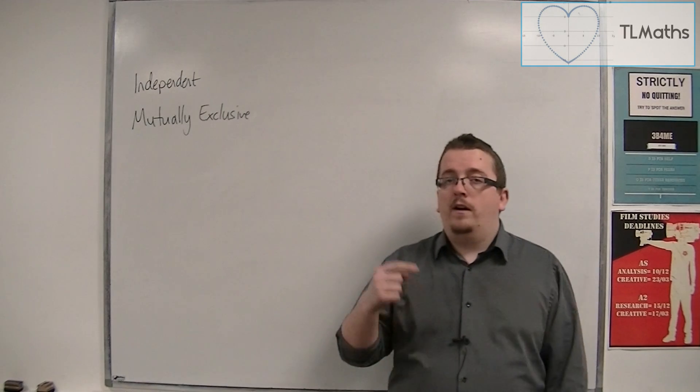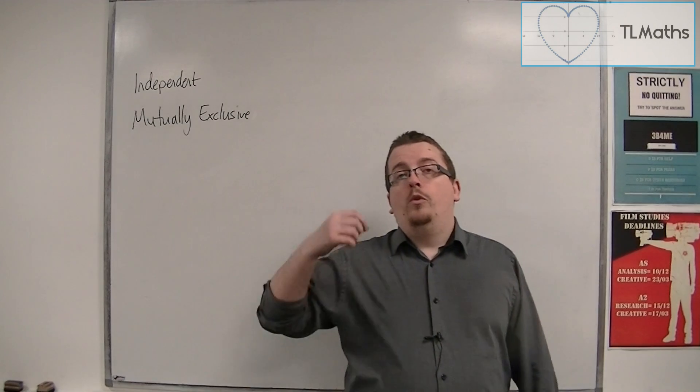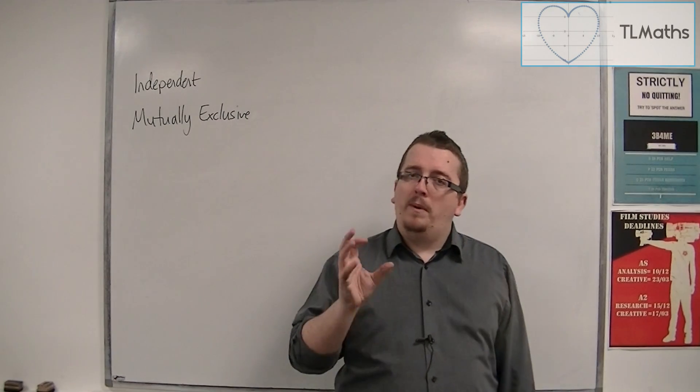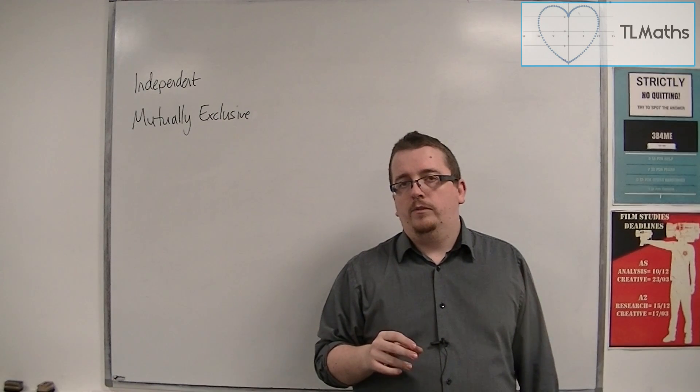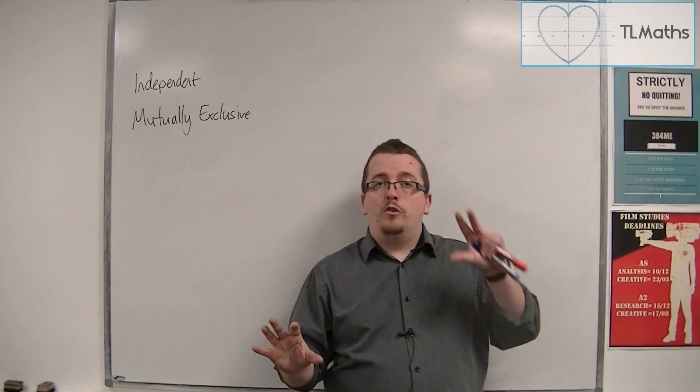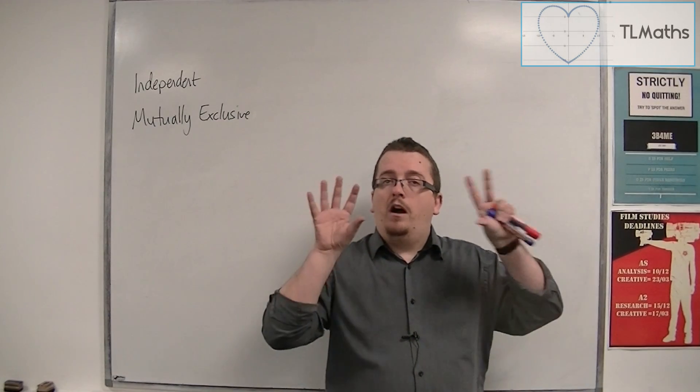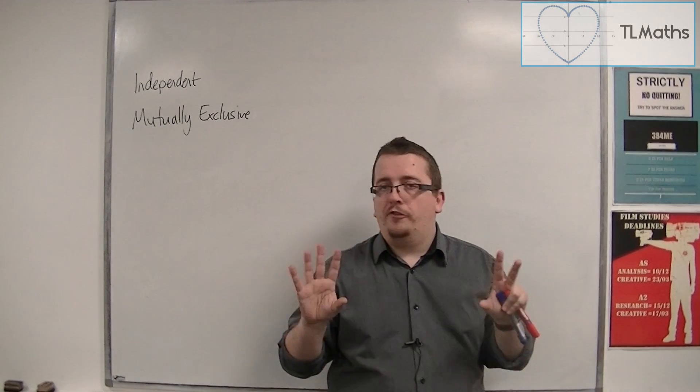Now, the fact of whether I get a 1 or a 2 or a 3 or whatever number on the roulette wheel will not affect the probability of getting an ace from the pack of cards. And so the two events rolling a 1 on the roulette wheel and drawing an ace from the pack of cards are independent of one another. One will not affect the other.